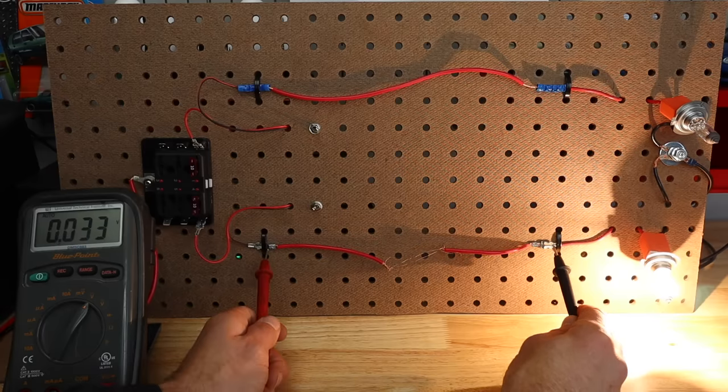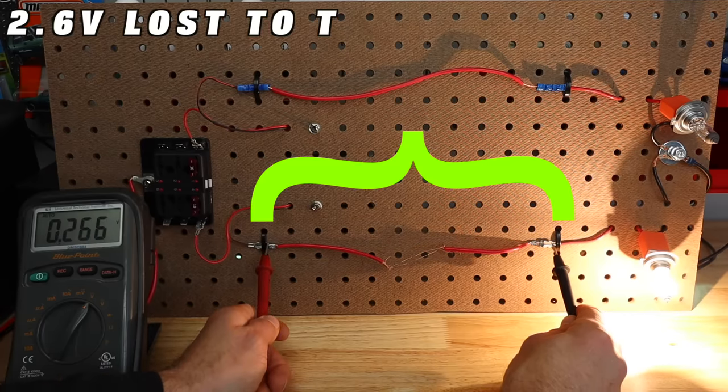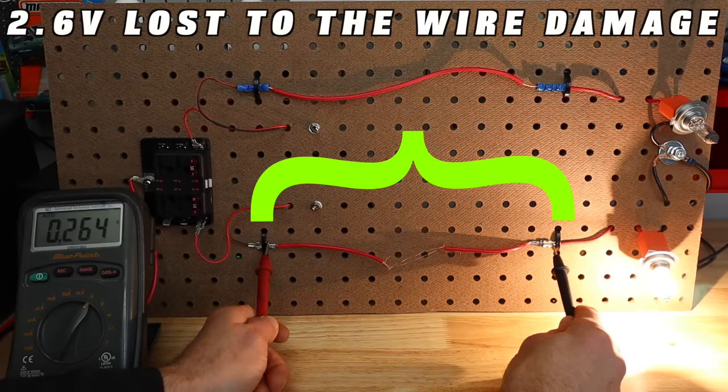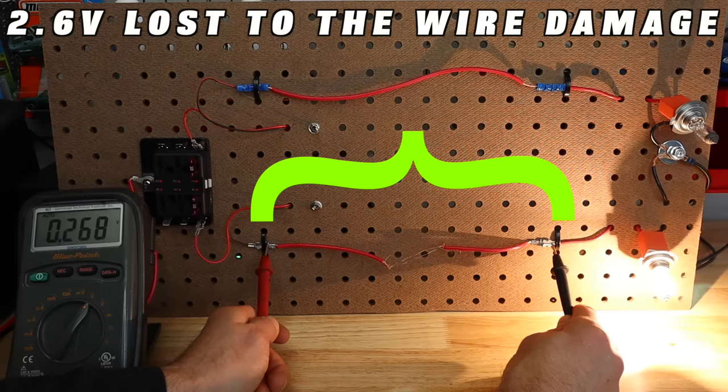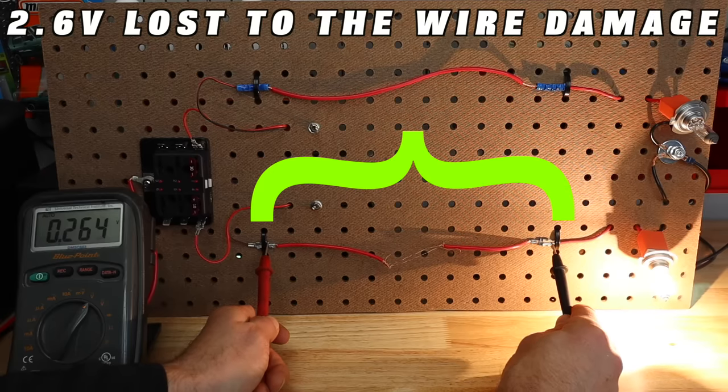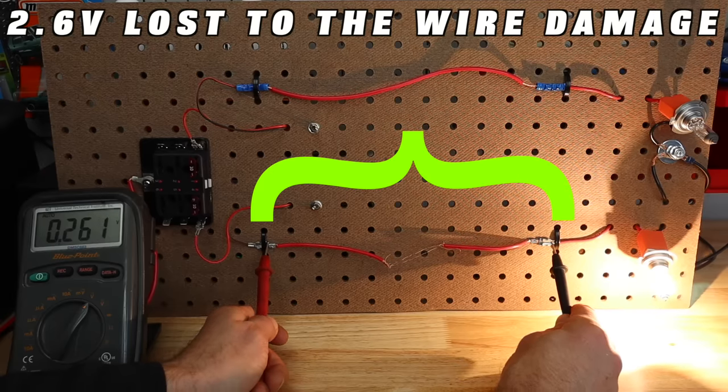So what I'll do is I'll check the voltage drop from this connection to this connection. We'll put one of our leads here, one on the other side, and you can see the difference in voltage potential or voltage pressure is going to be 0.26, we'll call it 0.26 volts.